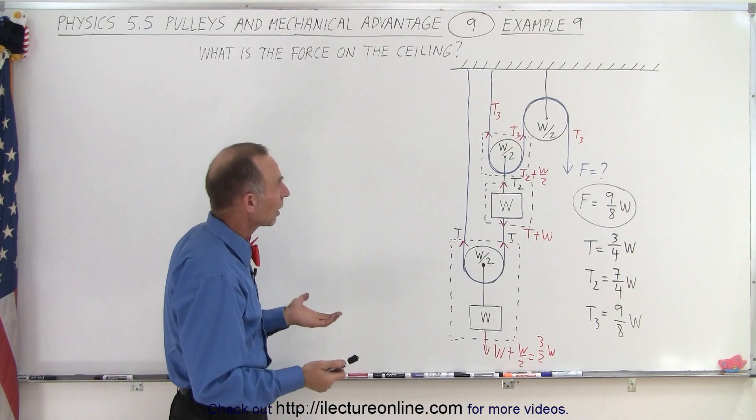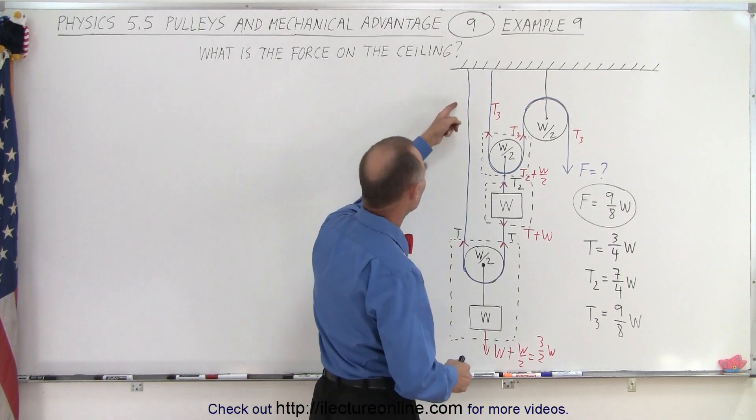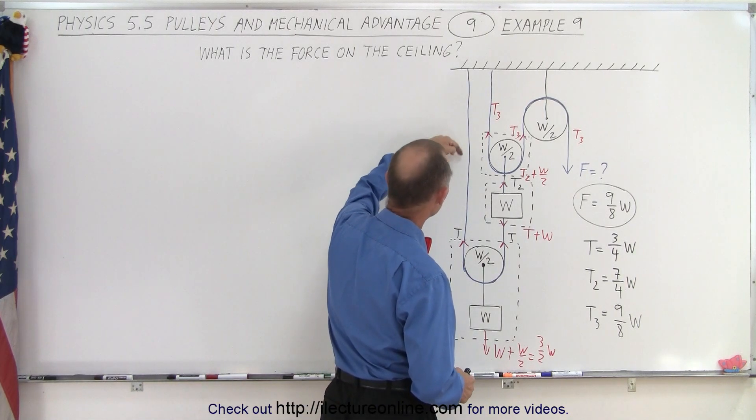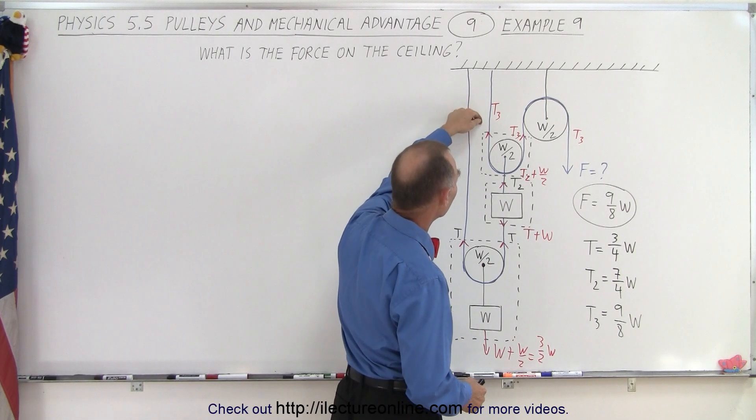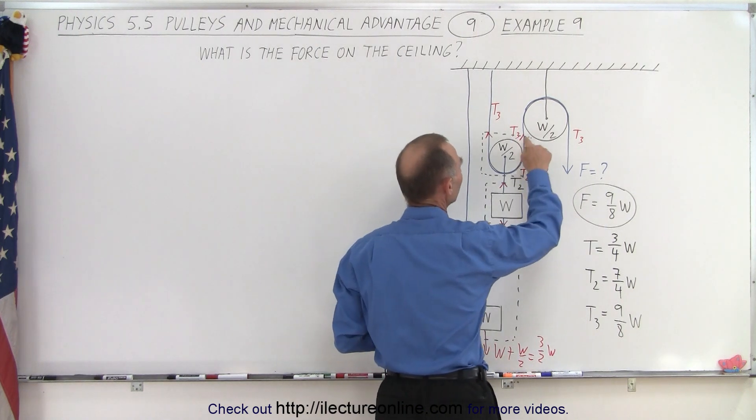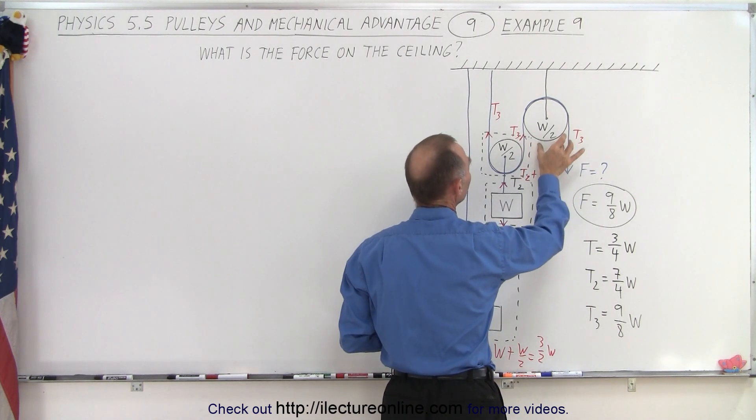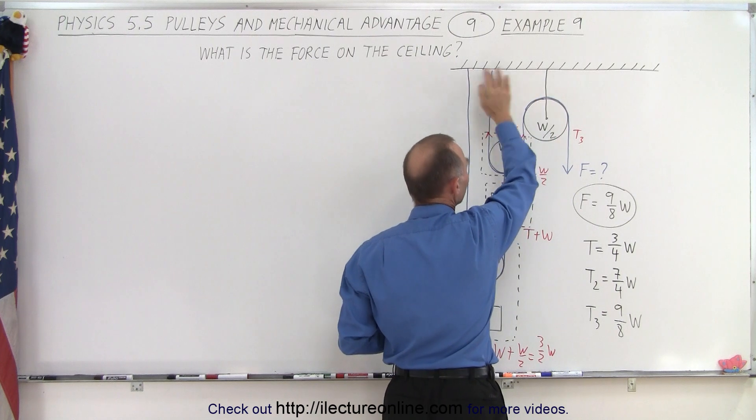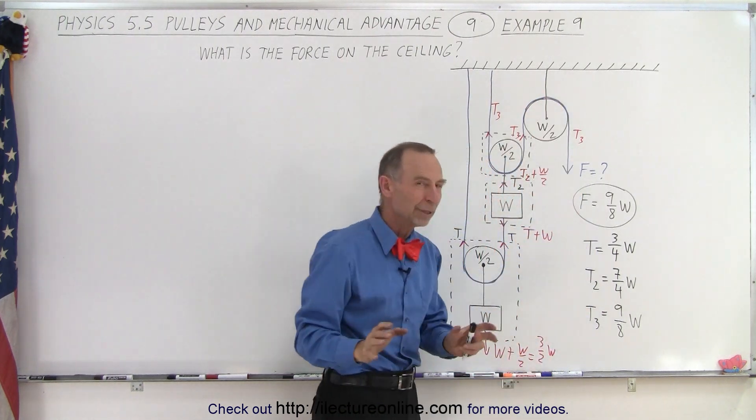At first you might say, well, let's see here we have the tension T pulling down this way and we have tension 3 pulling down this way. And then here we have tension 3 and tension 3 here. So if we double that, that would be the tension there. We add them all up, you get the force, but that would be wrong.